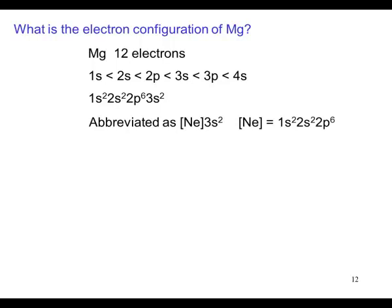This can be abbreviated by using the noble gas before magnesium, which is neon. Neon represents 1s2, 2s2, 2p6, and then 3s2 completes the 12 electrons.